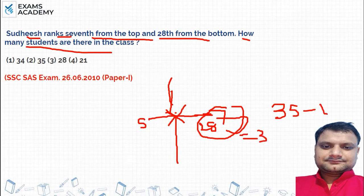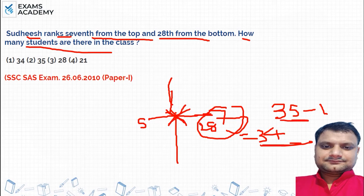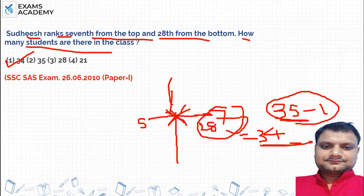34. The answer is 34. Because the 7th from the top and 28th from the bottom are the same position, you add both — 35 — then minus 1. So the answer is 34.